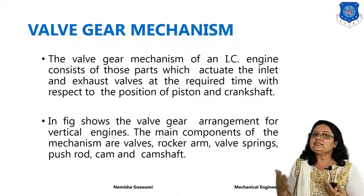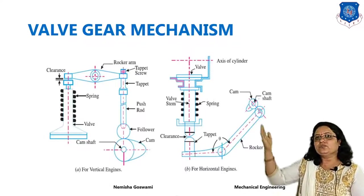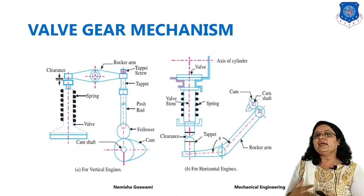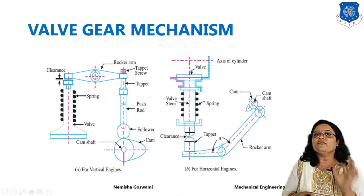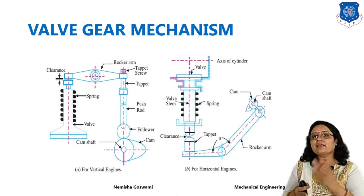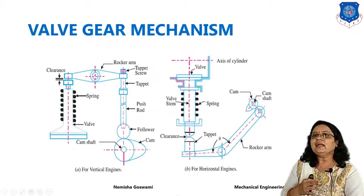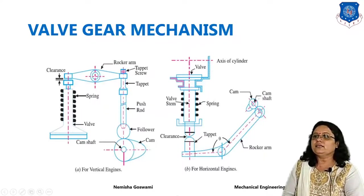In the next diagram you can see the valve gear mechanism for vertical engines and for horizontal engines — two separate diagrams. The basic fundamental of this diagram uses the cam and follower mechanism, which we have already seen in theory of machines. The motion of the cam is transferred to the follower, which then transfers motion to the push rod. This valve gear mechanism consists of a cam and follower mechanism along with a push rod.